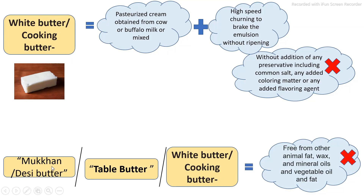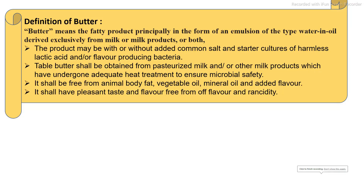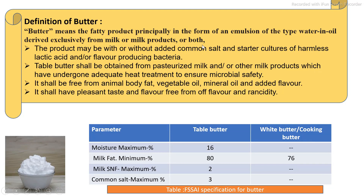In the butter manufacturing process — whether desi butter, table butter, or white butter — no other animal fat, waxes, mineral oils, or vegetable oils should be added. Only natural milk fat must be present in the final product. The quality of butter is maintained as per specifications. For table butter, a minimum of 80% milk fat is required, while for white and cooking butter a minimum of 76% fat content is required.